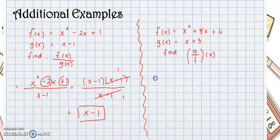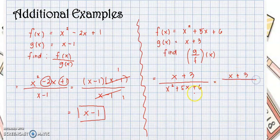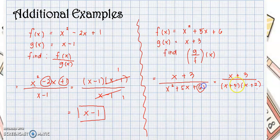And the last example: g is x plus 3, so that's the numerator, over the denominator x squared plus 5x plus 6. So x plus 3 is already prime. We need to factor out the trinomial — think of the factors of 6 that when added give 5, so that would be x plus 3 times x plus 2. As you can see, 3 times 2 is 6 and 3 plus 2 is 5, so those are the factors. You can cancel out x plus 3 — this is 1 and this is 1 also — so your answer would be 1 over x plus 2.